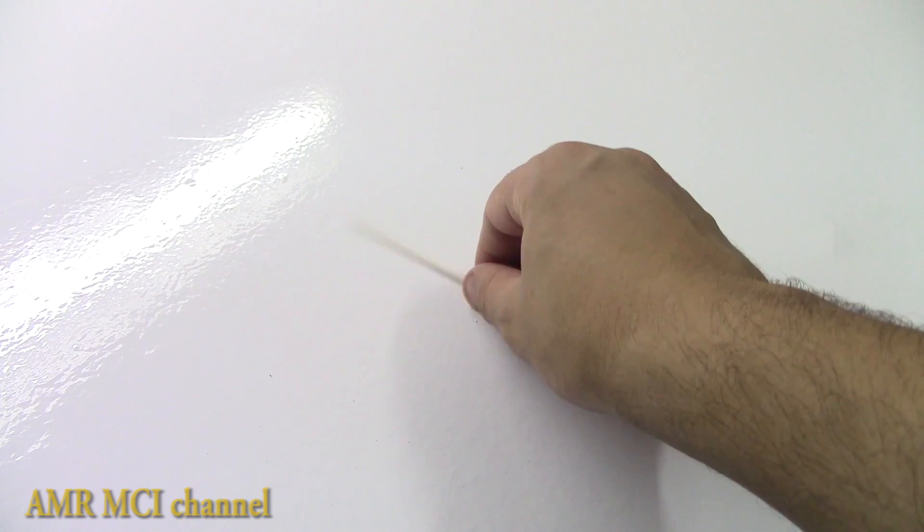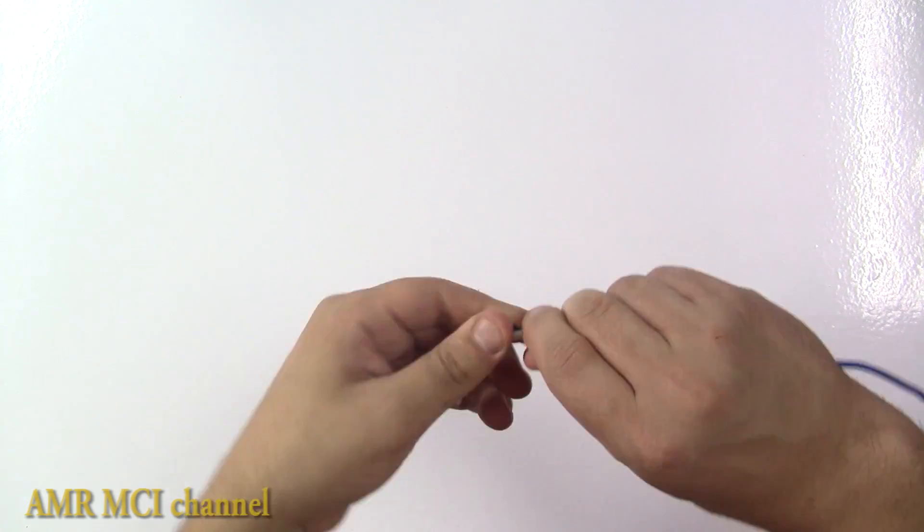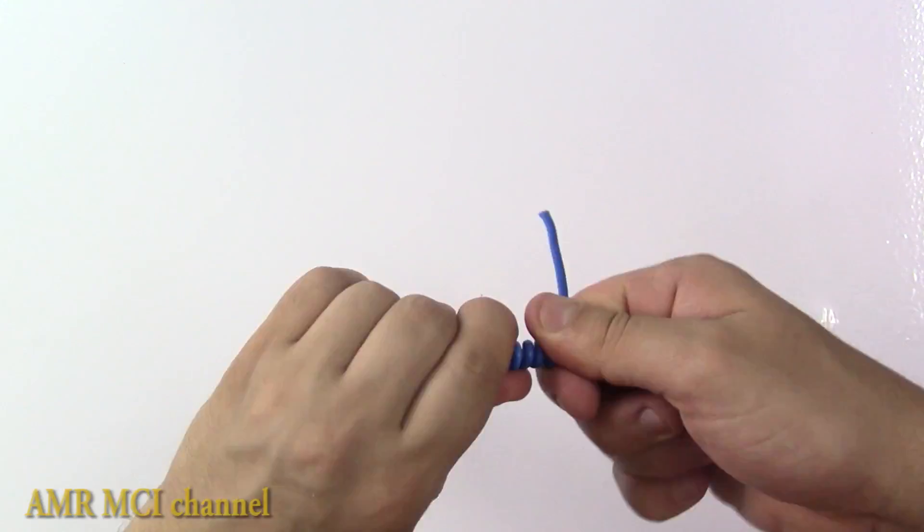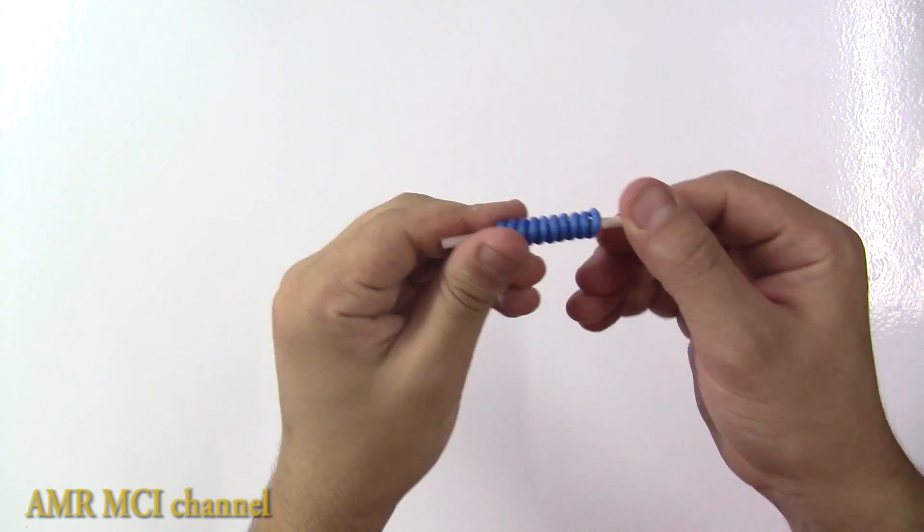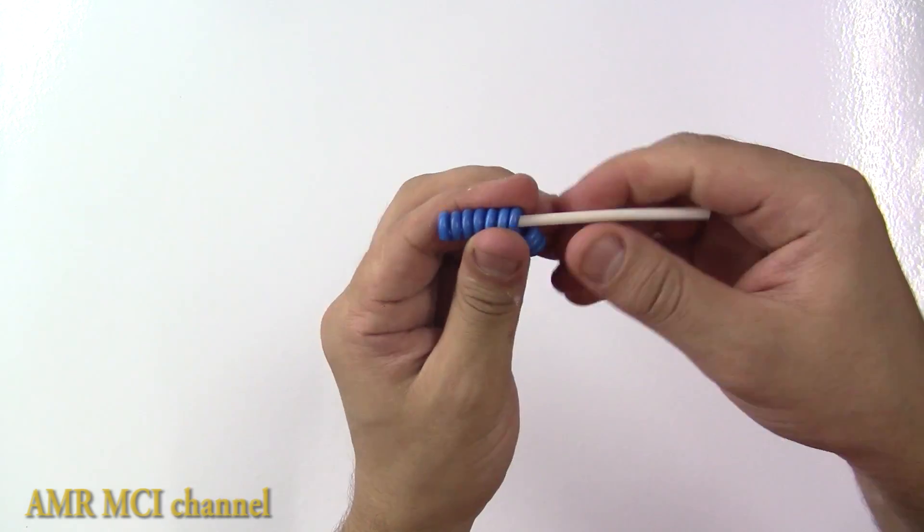Finally, let's make the handle brake by taking the last lollipop stick and the remaining hard cable and start curling it exactly the same way as we did before. After that, bend down the sides of the stick, forming this shape.